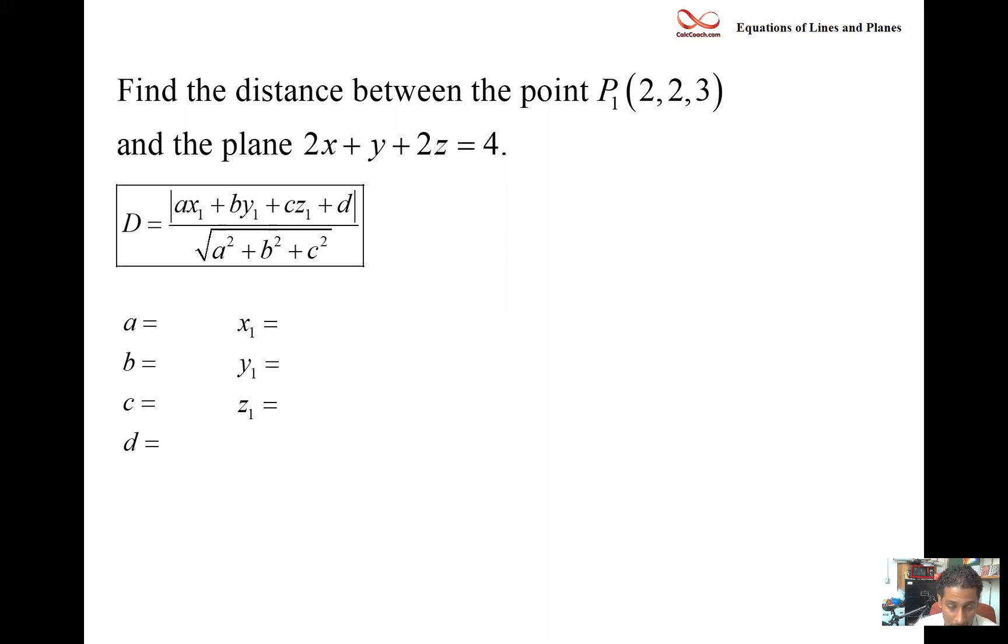So the a, b, c are the coefficients on x, y, and z—so 2, 1, and 2. The x₁, y₁, z₁ are the point coordinates—so 2, 2, 3.